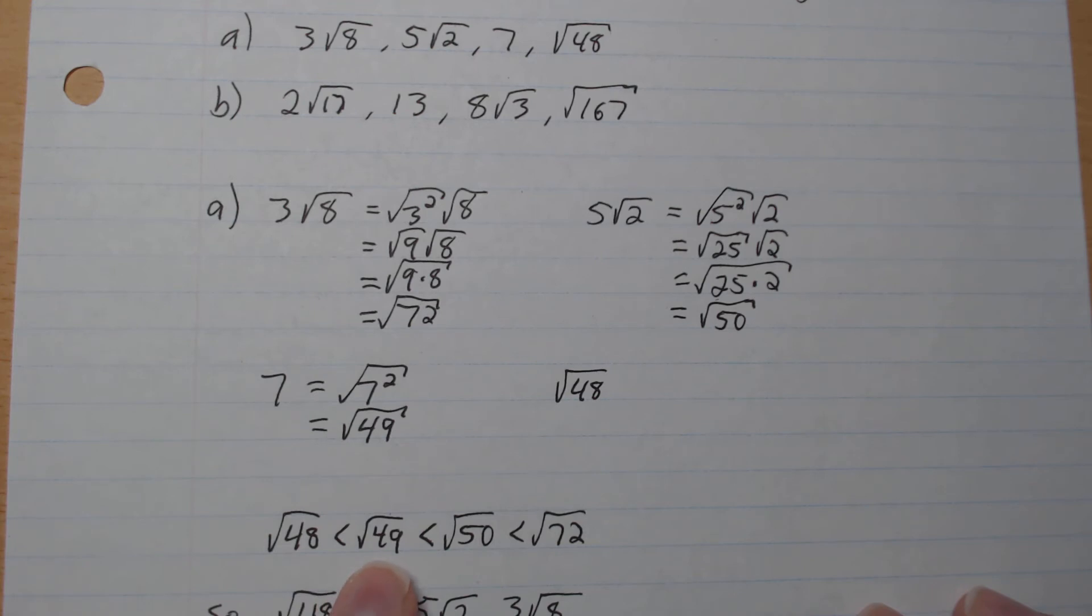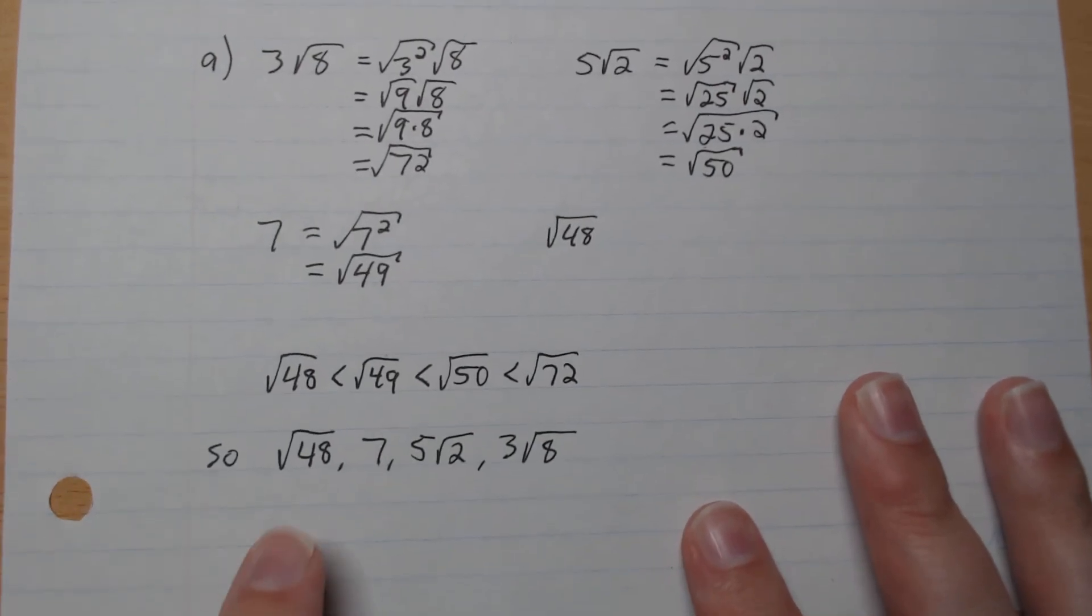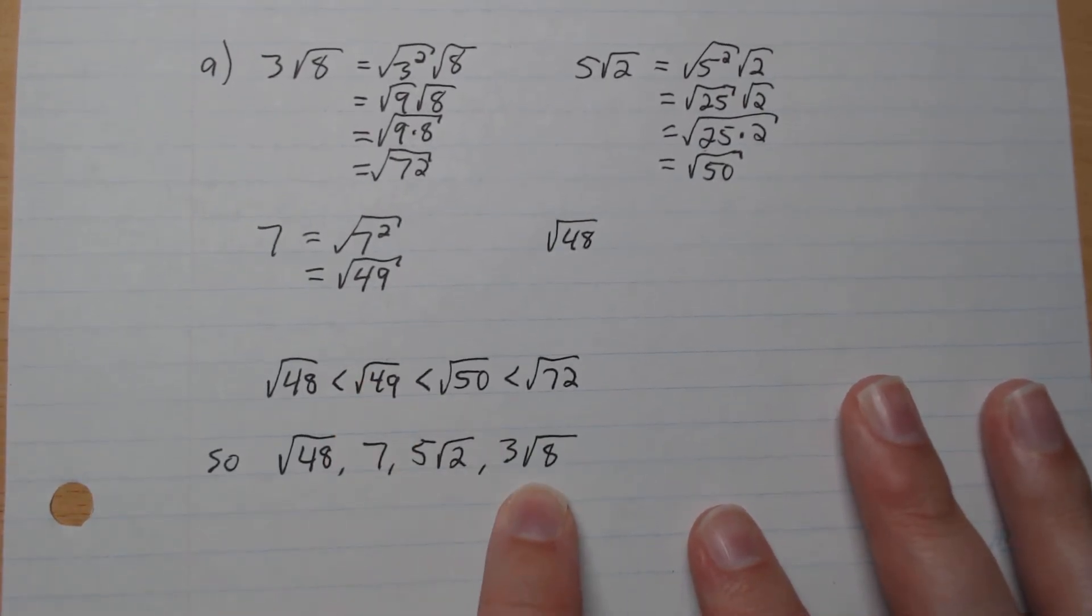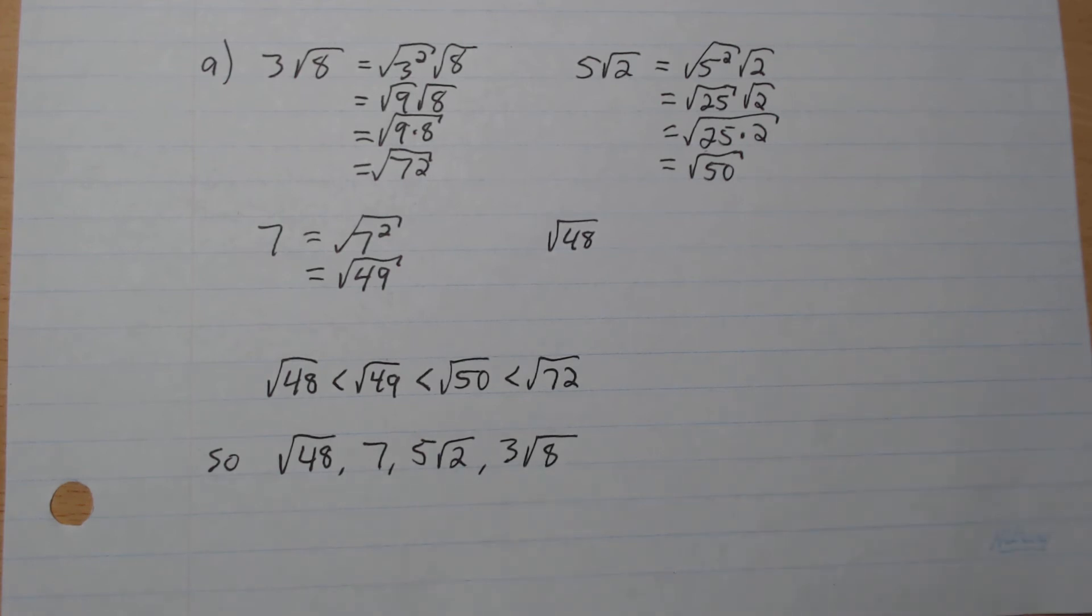So we have root 48, root 49, root 50, and root 72. So in other words, we have root 48, 7, 5 root 2, and 3 root 8 like that. This is from least to greatest as such.